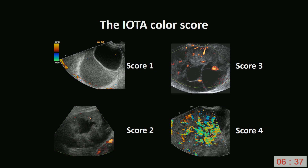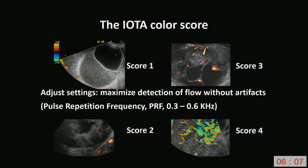The IOTA colour score is based on subjective evaluation of the colour content of the tumour scan. A colour score of 1 means no detectable colour Doppler signals; score 2 means minimal colour Doppler signals; score 3 a moderate amount; and score 4 abundant colour. To estimate the colour content, you must adjust your Doppler settings to maximise detection of slow velocity blood flow without artefacts. In most ultrasound machines, a pulse repetition frequency (PRF) of 0.3 to 0.6 kilohertz is optimal. Then increase the gain until colour Doppler artefacts appear, and decrease the gain until artefacts just disappear.